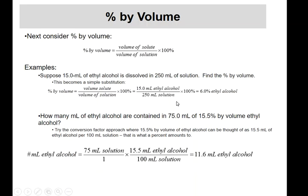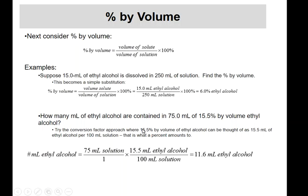Percent by volume is the volume of solute divided by the volume of solution, multiplied by 100%. Suppose 15 mL of ethyl alcohol is dissolved in 250 mL of solution — the percent by volume is simply 15 divided by 250, times 100, which equals 6% ethyl alcohol. When you think about liquor proof, proof is roughly like percent times two, so 200 proof is essentially 100%.